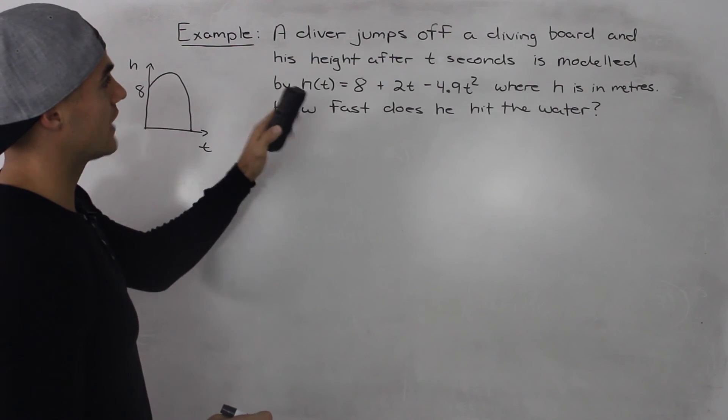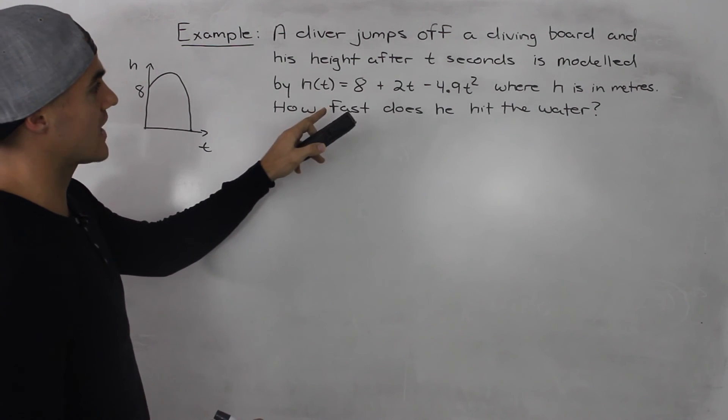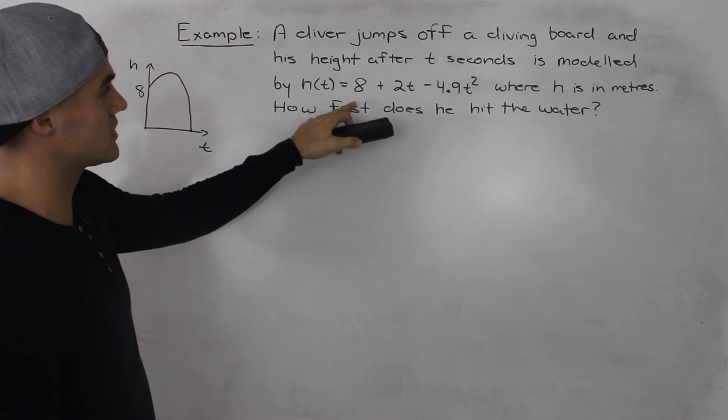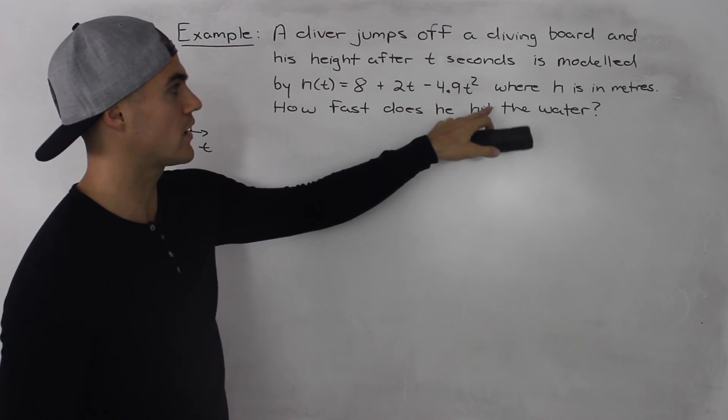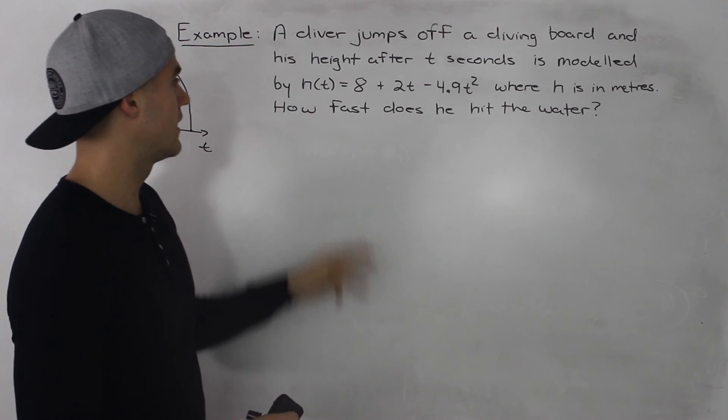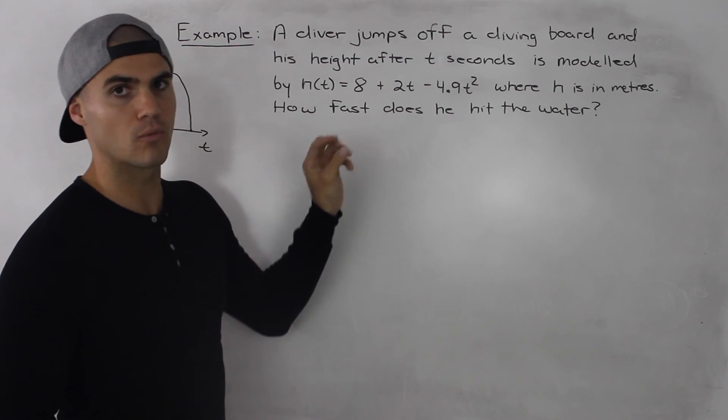So a diver jumps off a diving board and his height after t seconds is modeled by h(t) = 8 + 2t - 4.9t² where h is in meters. How fast does he hit the water?